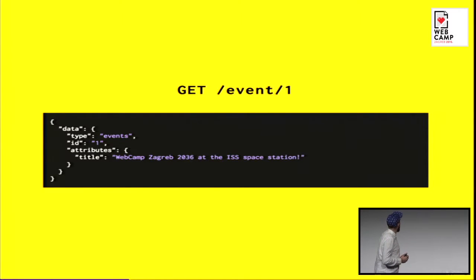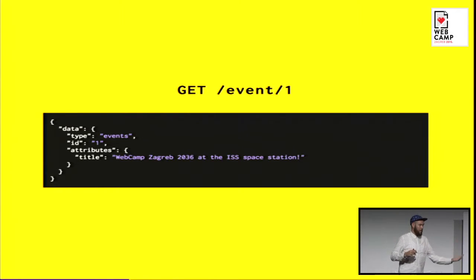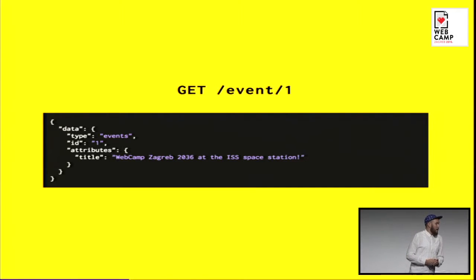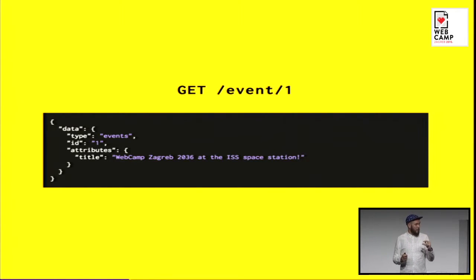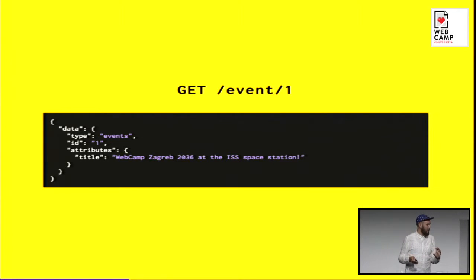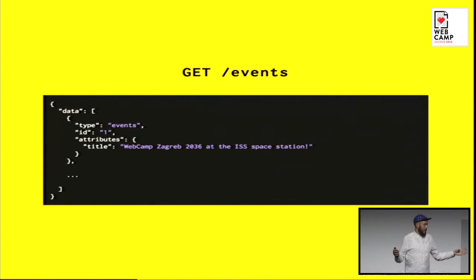This is an example of designing the same case using JSON API. At the top level, we have a key named 'data' — data represents the main thing we get back from this endpoint. Here we do a GET to an event with an ID, so we expect to get an event back. The object has a 'type' and an 'id' — these two are important because they're specified and must be there. By using these two, we can always reference an object from the API, since their combination is always unique. Then we include some 'attributes', namespaced by themselves — for example, a title. If we have many events, we can just put an array in the data field instead.